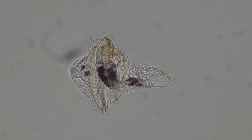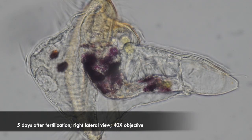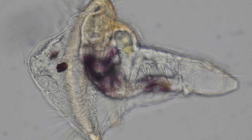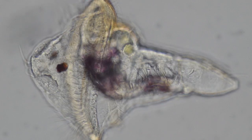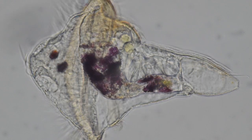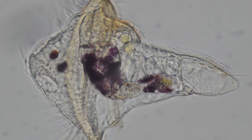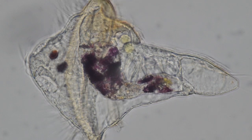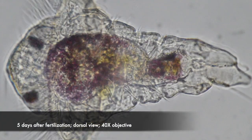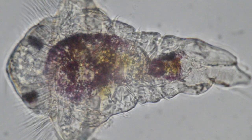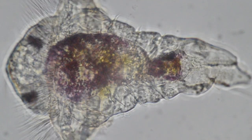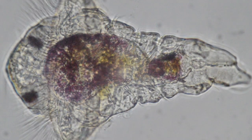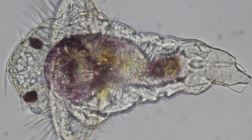You can see prototrochal and metatrochal cilia a bit better in this older larva, especially at higher magnification. This larva has three segments that have chaetae already. You can see those three pairs of chaetae better in dorsal view. When larvae of this type of annelid — serpulids — have three segments, they are usually ready to metamorphose.